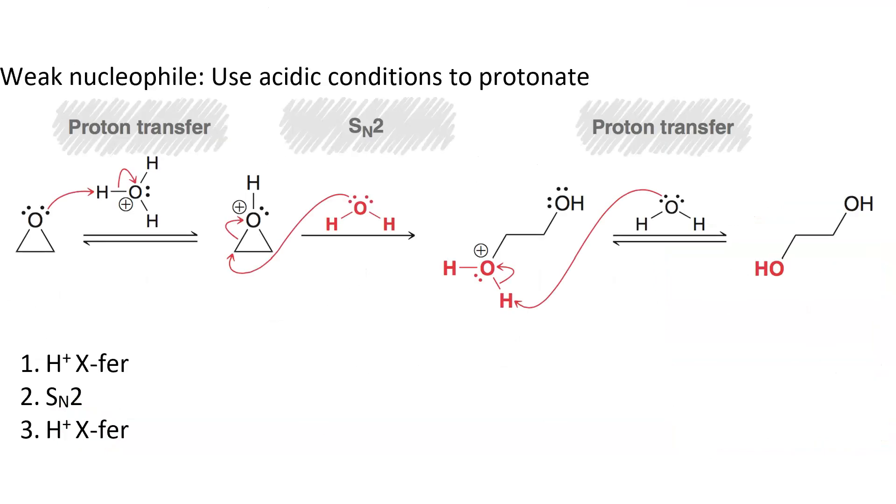With a weak nucleophile, like methanol, we use acidic conditions to protonate the epoxide. So, the hydronium in the first step acts as a proton source, the epoxide acts as a base. We then have this protonated epoxide, and water can attack, which opens the ring.